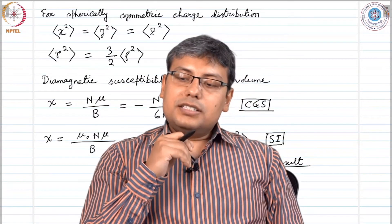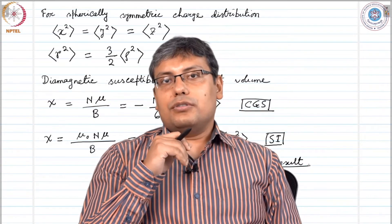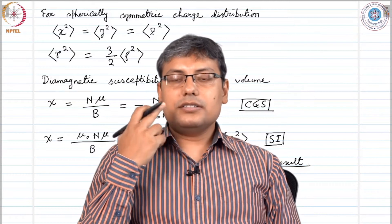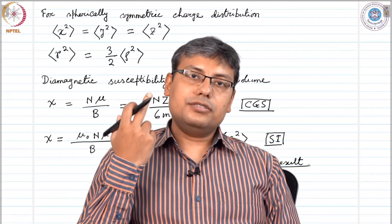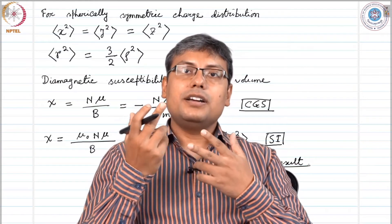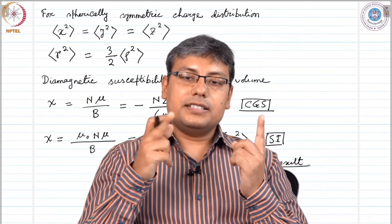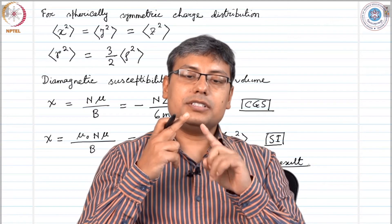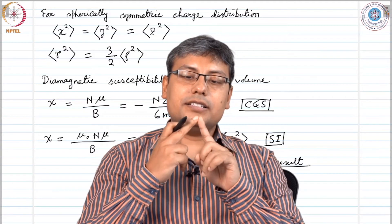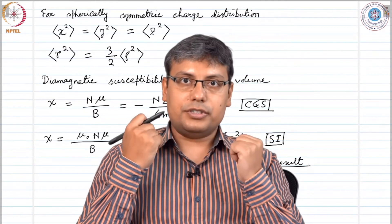But where does this Langevin theory go wrong? If we consider the precession of electrons, of course there is a current. But if one electron precesses like this here and another electron precesses like this here, then at the junction the current is equal and opposite.